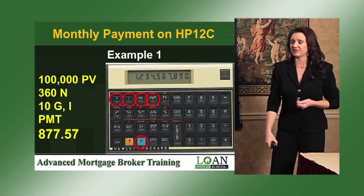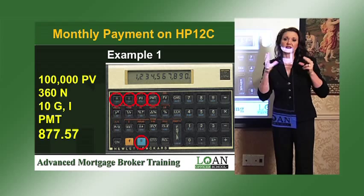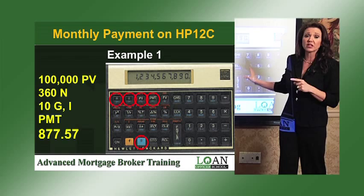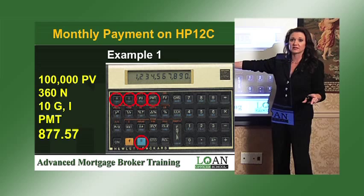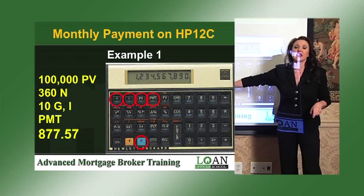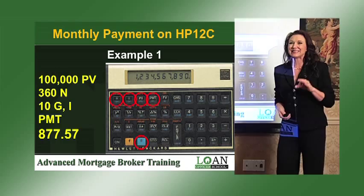Now let me give you a quick little tip. All calculators store things into their memory, and sometimes it stores things at the wrong time. So always do a sample formula on your calculator before you quote anything to a borrower. I always use this exact formula: 100,000 present value, 360 term, 10 GI, then hit my payment key. The answer should always be 877.57. If for some reason it isn't, you've got something stuck in the memory and you need to clear it.